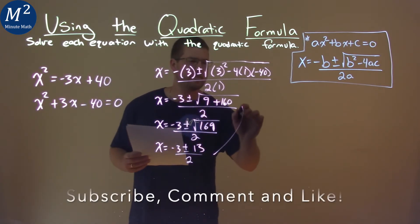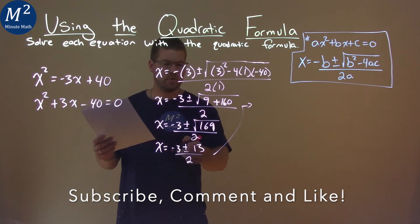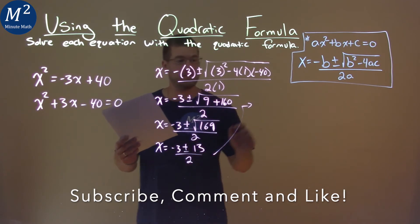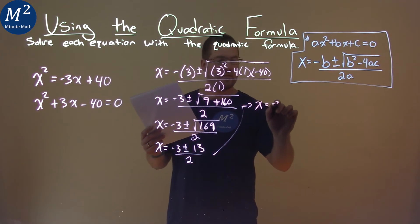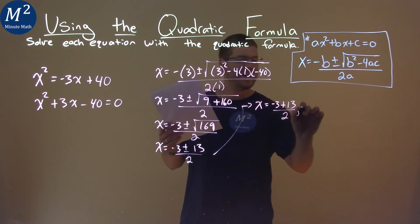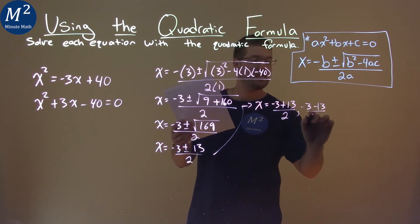So, it's at this point I have to break this down as two separate questions, or solving, plus and then the minus. So, x equals a negative 3 plus 13, over 2, and negative 3 minus 13, over 2.